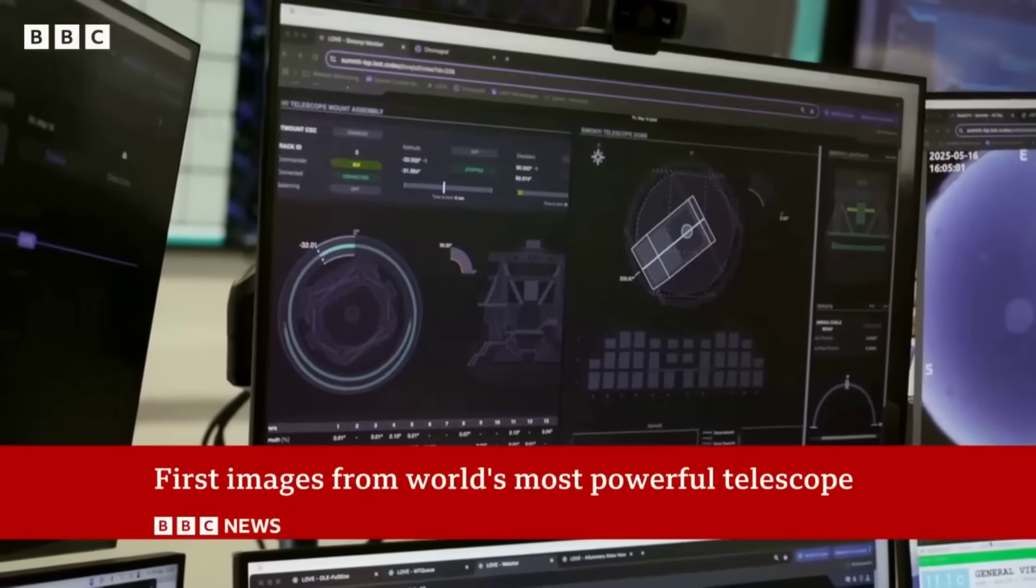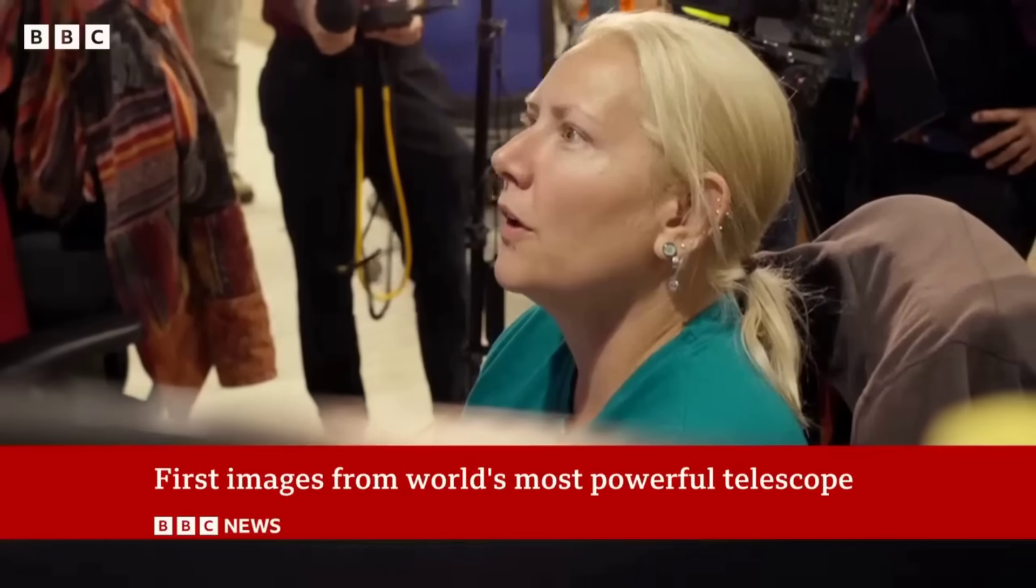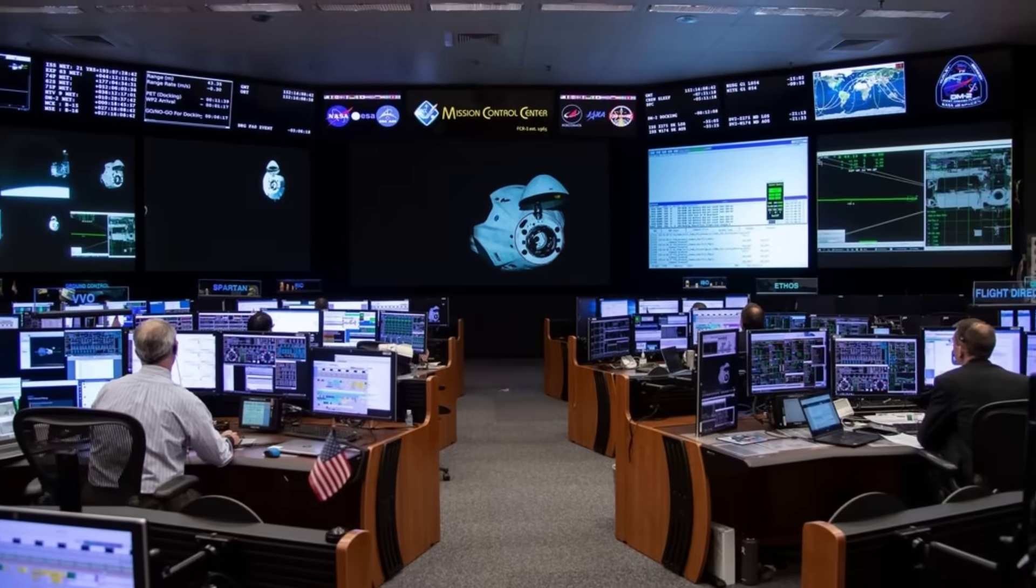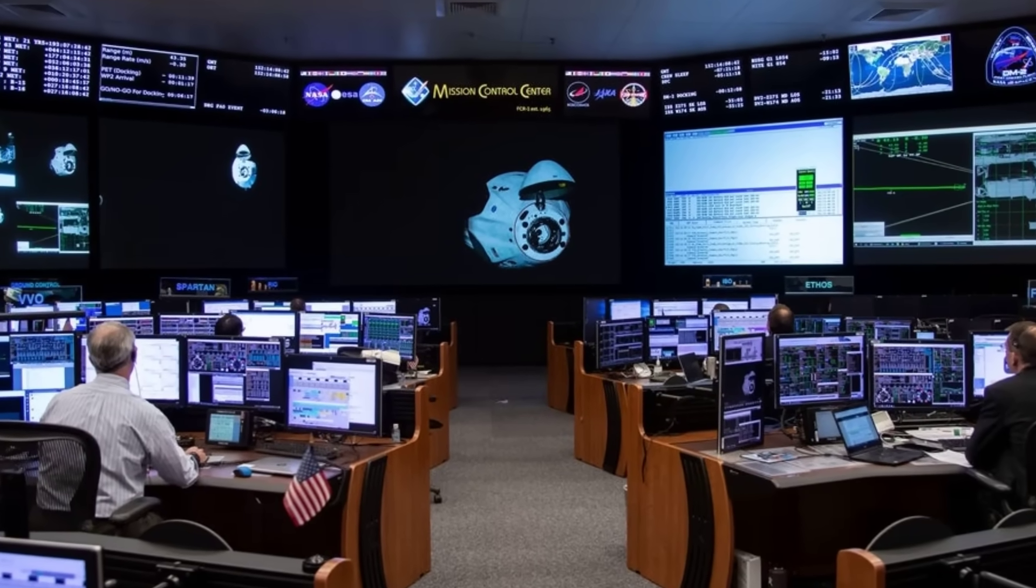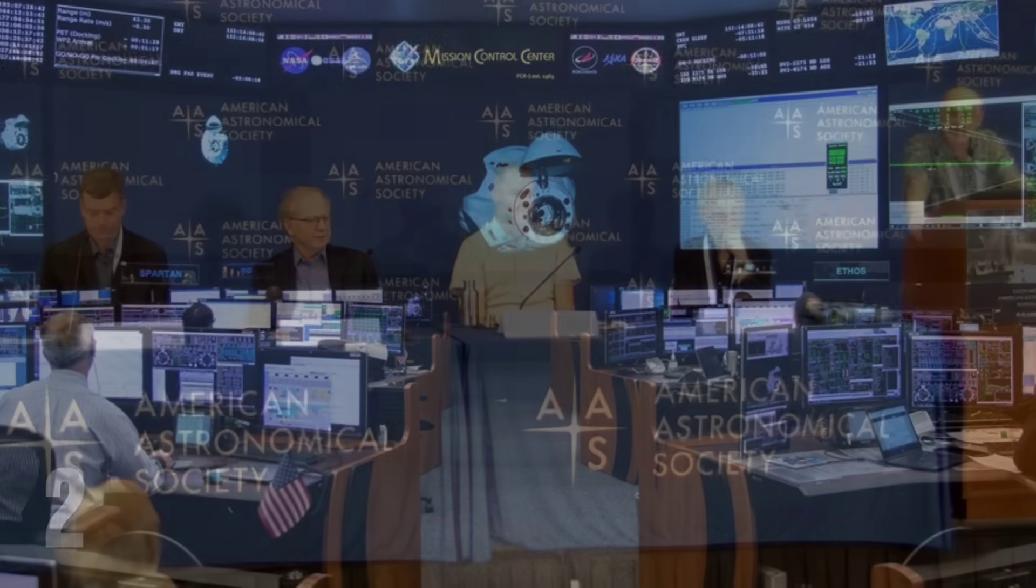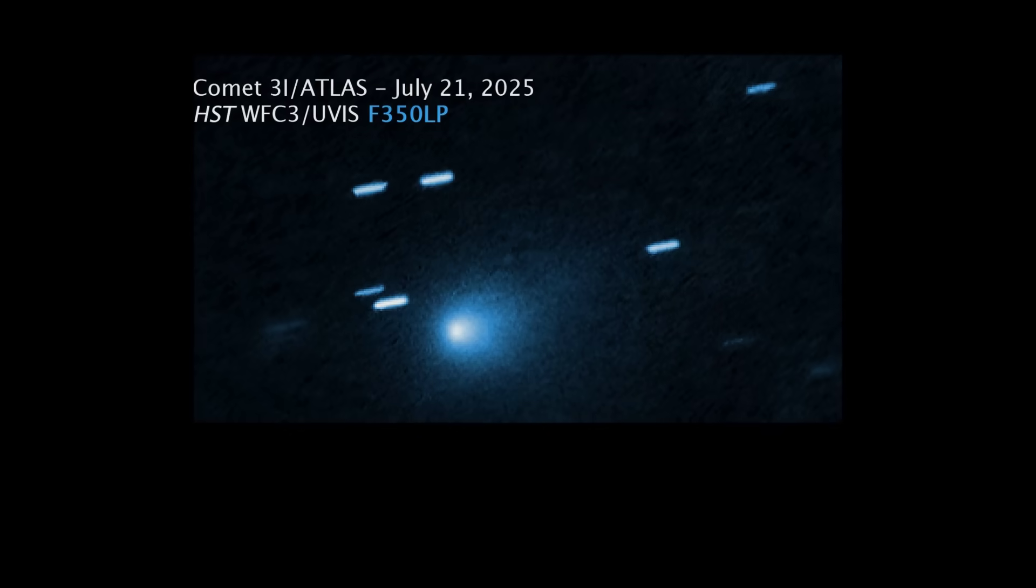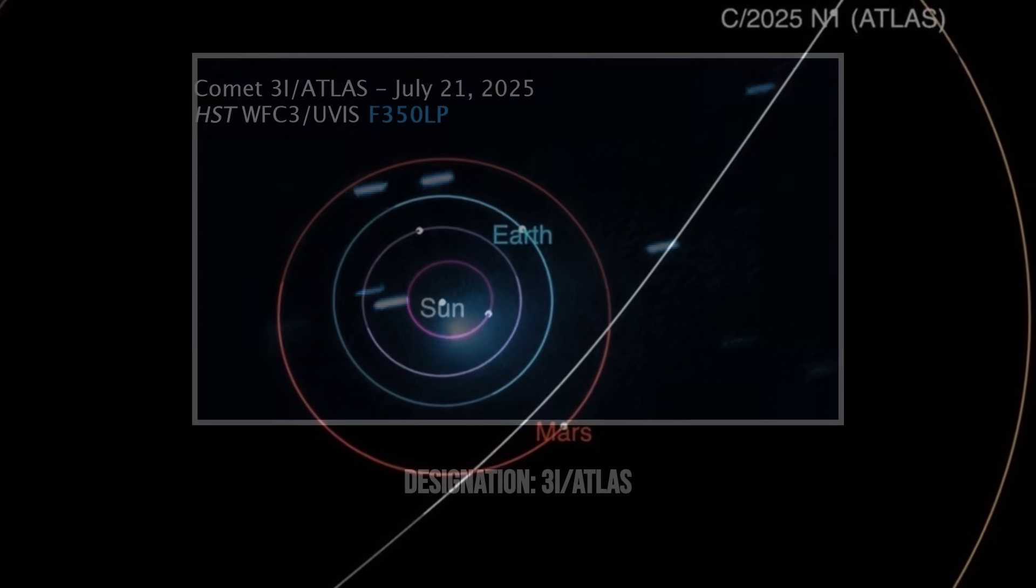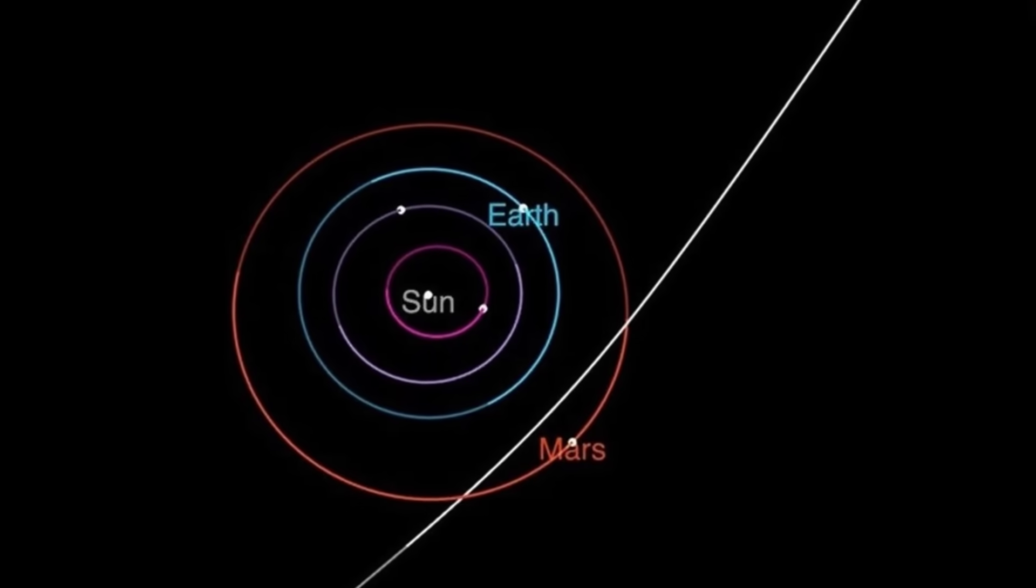Within hours, astronomers were checking old images, chasing the trail back to mid-June, and feeding coordinates into orbit calculators. It didn't take long for the Minor Planet Center to confirm what the numbers were saying. This was the third interstellar object ever spotted passing through our solar system. The official designation, 3I-Atlas, breaks down simply—the third interstellar found by Atlas.